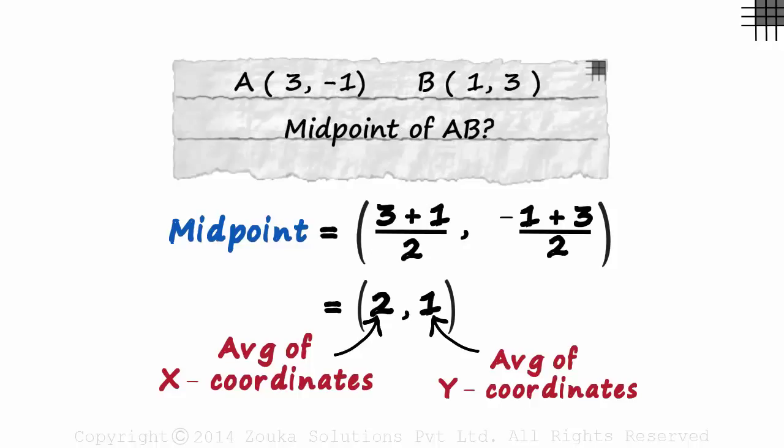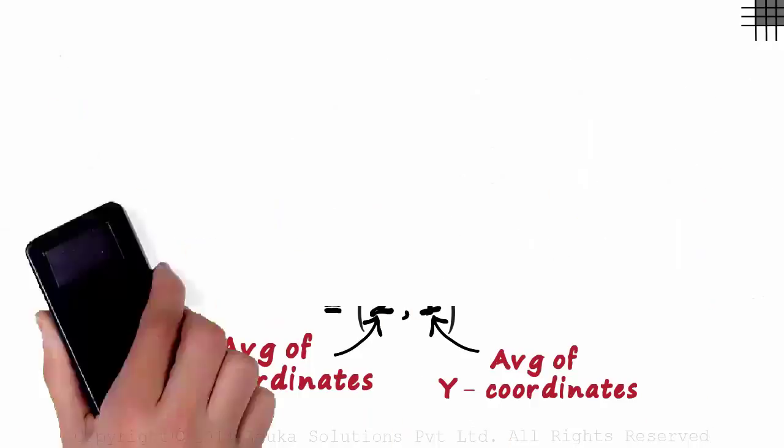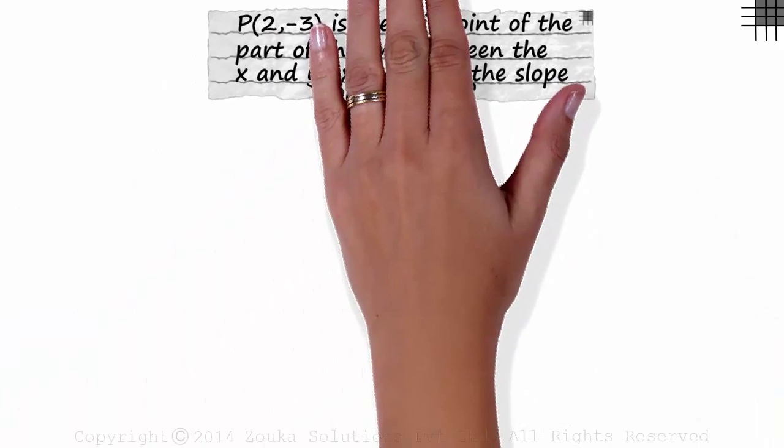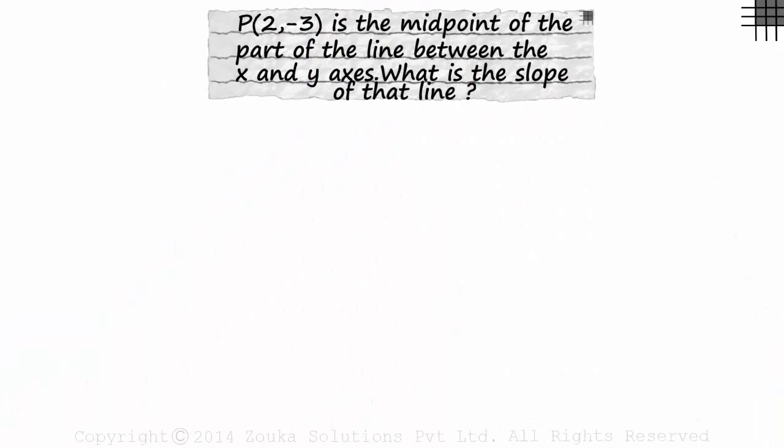But midpoint problems are not always this easy. In the next problem, we are given that P is the midpoint of the part of the line between the axes. We are given the midpoint this time, and we are asked for the slope of that line.